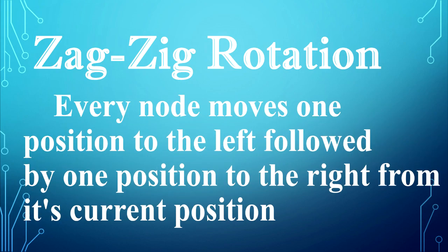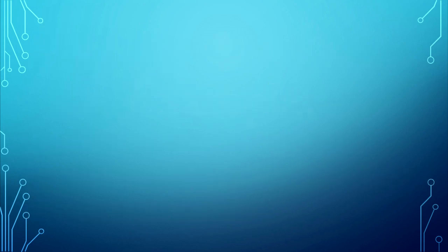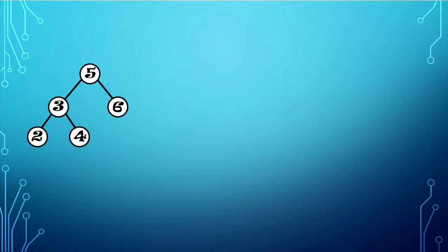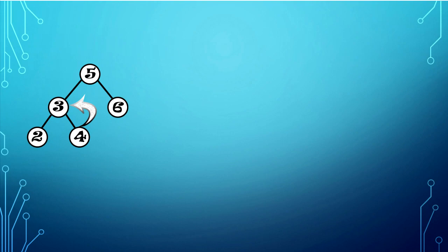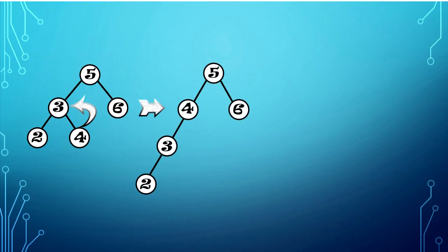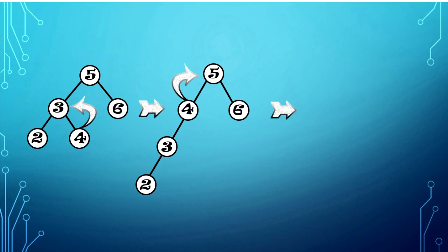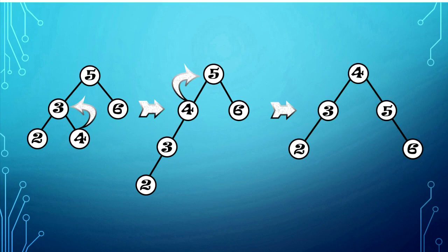Zag-zig rotation. In zag-zig rotation, every node moves one position to the left, followed by one position to the right from its current position. We will splay element 4 using zag-zig rotation. The element 4 will be moved once to the left, and then moved once to the right. In the first rotation, element 4 will move once to the left and become the parent node of element 3. Then, move element 4 once to the right. The result will be: element 4 will be the new root node, element 5 will be its right child, and element 3 will be its left child.